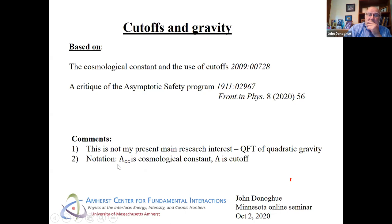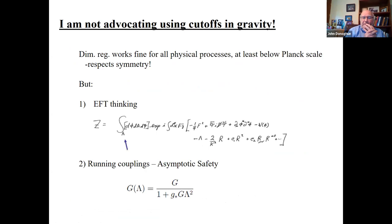I want to tell you about notation: I use lambda in two senses. Lambda with no subscripts is the cutoff; lambda with subscript CC is the cosmological constant or the vacuum energy. I also don't want to pretend I'm advocating for using cutoffs here. I personally only use dimensional regularization when I do effective field theory or even quadratic gravity, because that respects the symmetries and cutoffs really don't.